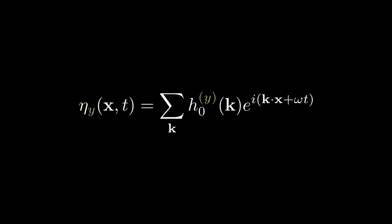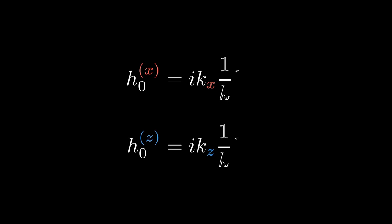The complex amplitudes that we discussed above are for the vertical displacement of the surface. But, as you remember, in Gerstner waves there is also a horizontal movement. Amplitudes for horizontal displacement can be computed using vertical amplitudes like this. We multiply by i to change sines into cosines and by a normalized wave vector to get the correct direction of the displacement.